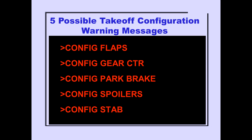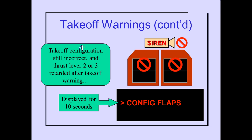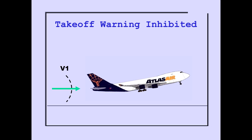These configuration messages are covered in more detail in the flight controls and landing gear modules. If engines 2 and 3 thrust is decreased below the takeoff range and the airplane is still incorrectly configured for takeoff, the siren no longer sounds and the master warning lights extinguish. However, the ICAS warning message remains displayed for 10 seconds. The takeoff configuration warnings are inhibited after V-1 on takeoff.